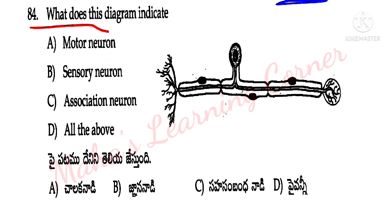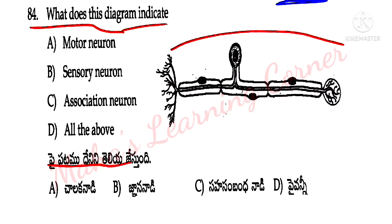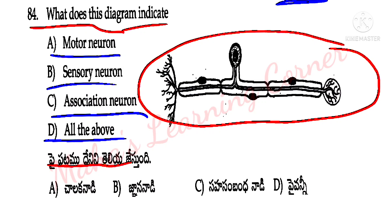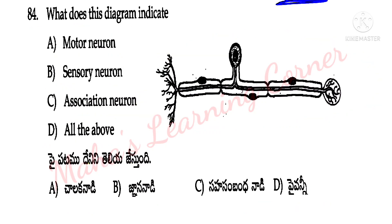What does this diagram indicate? Options: motor neuron, sensory neuron, association neuron, all the above. Correct answer: option B — sensory neuron.